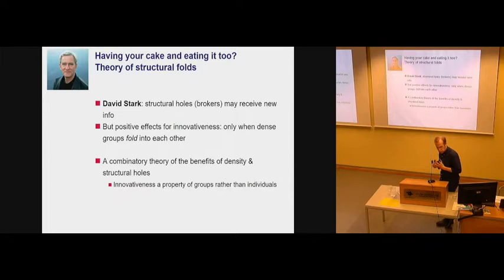And you can actually recombine all stuff only when you're part of cliques that fold into each other. This is what he argues. So this is a kind of like a combinator theory of the benefits of density and social structures. And he also thinks it sort of logically follows that innovativeness actually is a property of groups, not of individuals, because it's a property of these cliques that fold into each other.